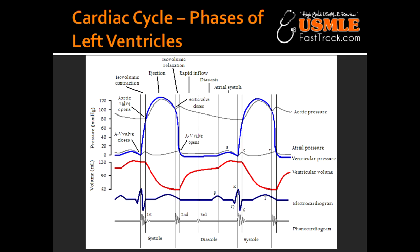Isovolumetric relaxation is the period between aortic valve closing and the mitral valve opening. At this stage, there's nothing entering the left ventricle. The ventricles are just relaxing, waiting for more blood to eventually come when the mitral valve opens. Until that happens, the ventricles are simply relaxing and there are no changes in the volume of the left ventricle — nothing coming in — so it's isovolumetric.